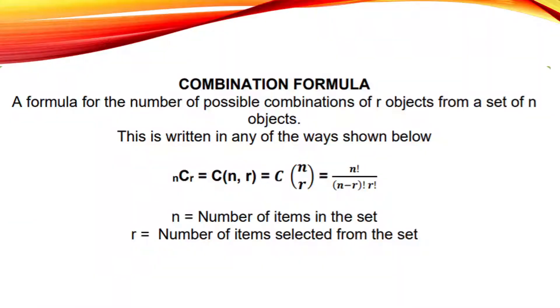We have here a combination formula. A formula for the number of possible combinations of r objects from a set of n objects. This is written in any of the ways shown below. So, we have here different ways in showing a combination. So, here 1, 2, 3, and this one. And n is for the number of items in the set. And r is the number of items selected from the set.